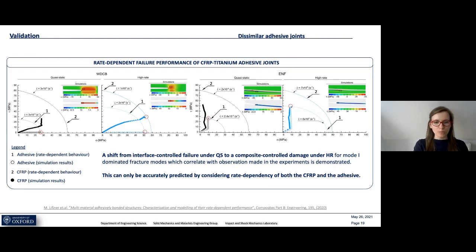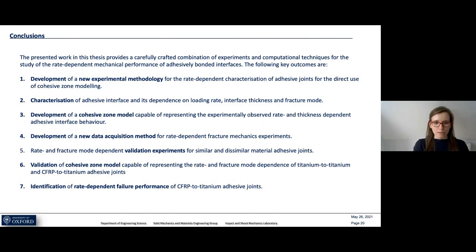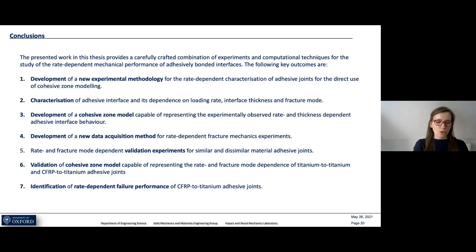This information is crucial, as it shows that the rate-dependent failure performance of a multi-material adhesive joint — shifting from interface-controlled failure in quasi-static to composite-controlled failure in high-rate for mode-one-dominated cases — can only be predicted by having the individual rate-dependent response of both the composite and the adhesive interface. To conclude, this thesis developed a new experimental method for rate-dependent characterization of adhesive joints, enabling direct measurement of stress-displacement curves for cohesive zone modeling. The new cohesive zone model was successfully validated using fracture mechanics tests, and a new data acquisition method was developed for dynamic cases, also found useful for dynamic delamination of composites in general.